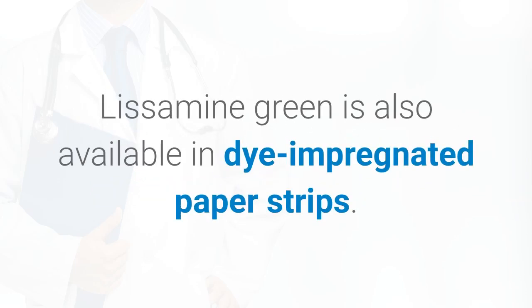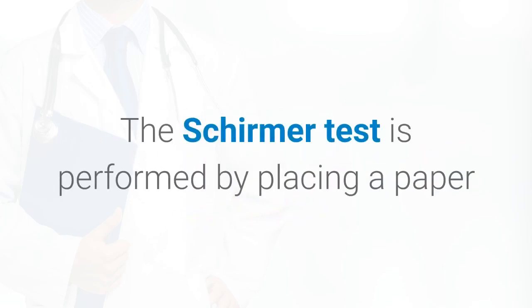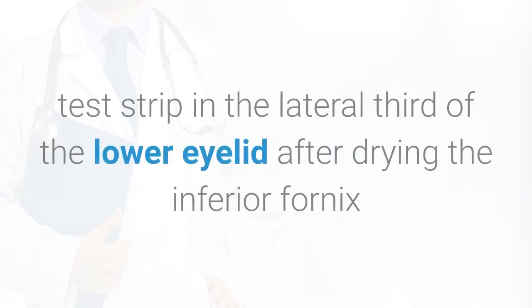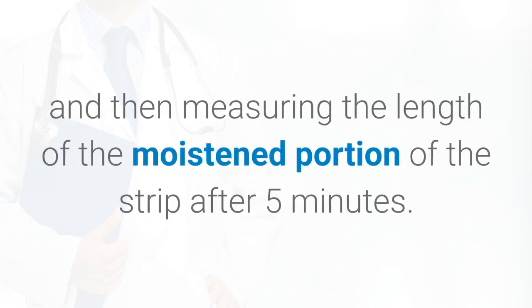Lissamine green has similar staining characteristics but is much better tolerated than rose bengal, and is also available in dye-impregnated paper strips. The Schirmer test is performed by placing a paper test strip in the lateral third of the lower eyelid after drying the inferior fornix.